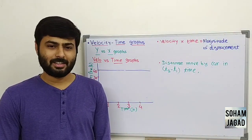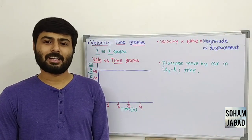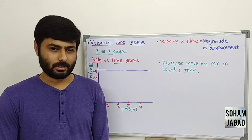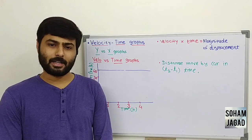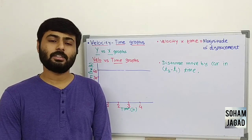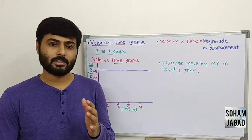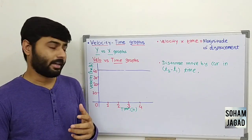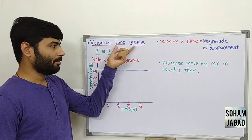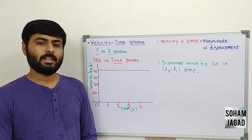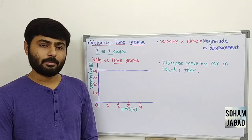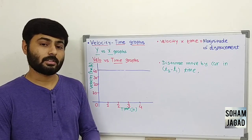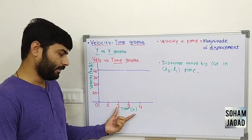Welcome dear student. In the last class we have seen graphical representation of motion. In graphical representation of motion, the first kind of graph is distance versus time graph, and the second kind of graph is the velocity-time graph. The velocity-time graph is a representation of change in velocity with time.